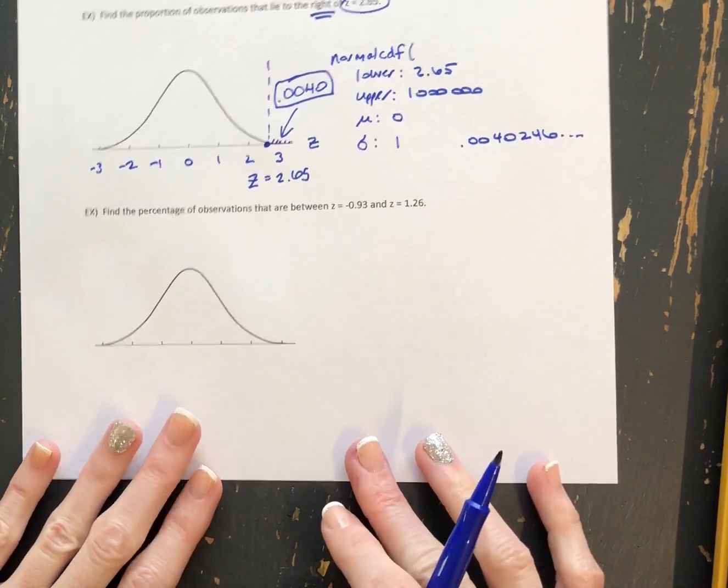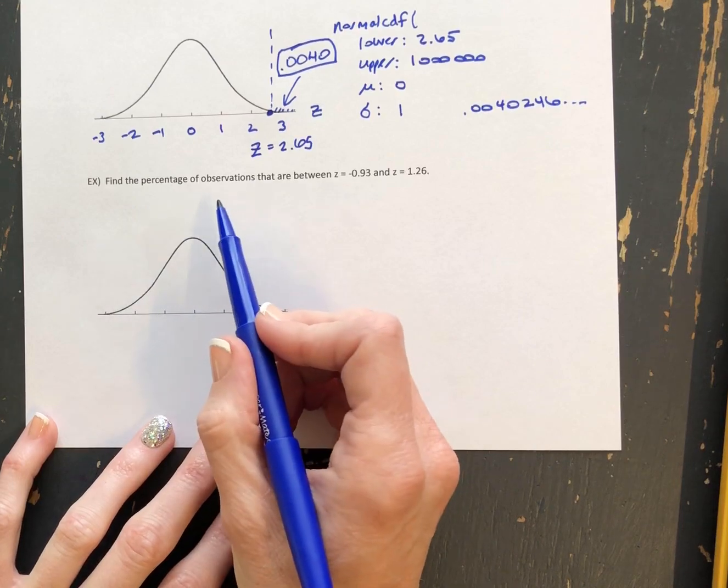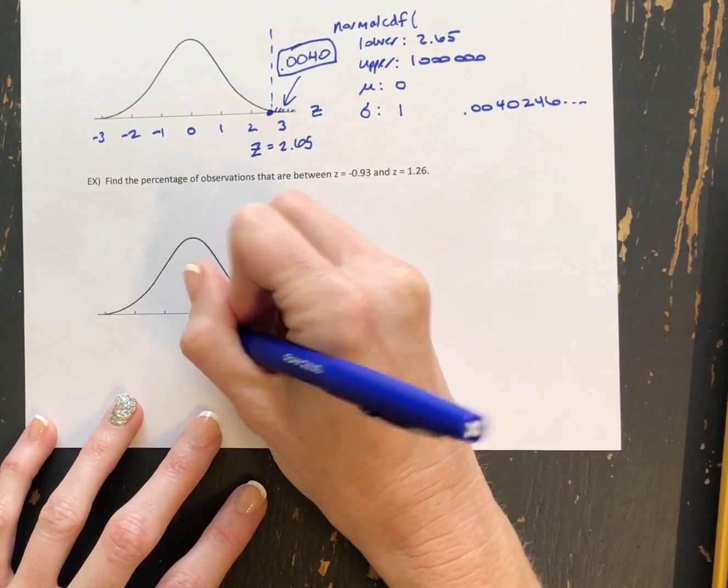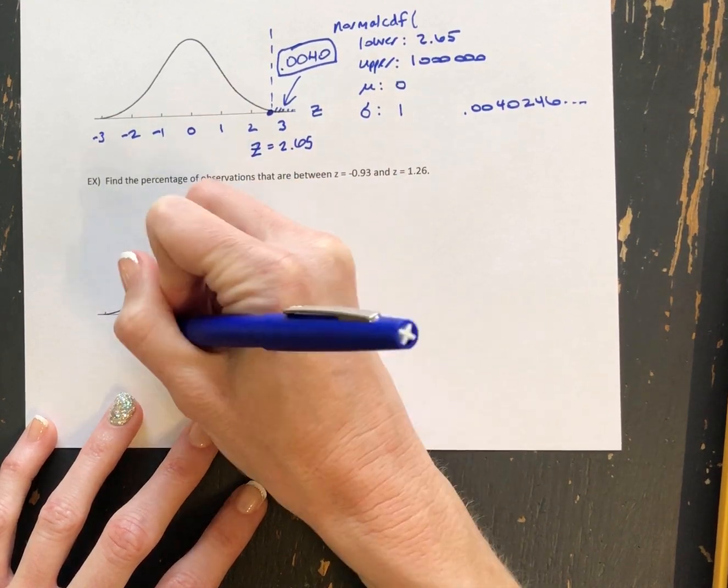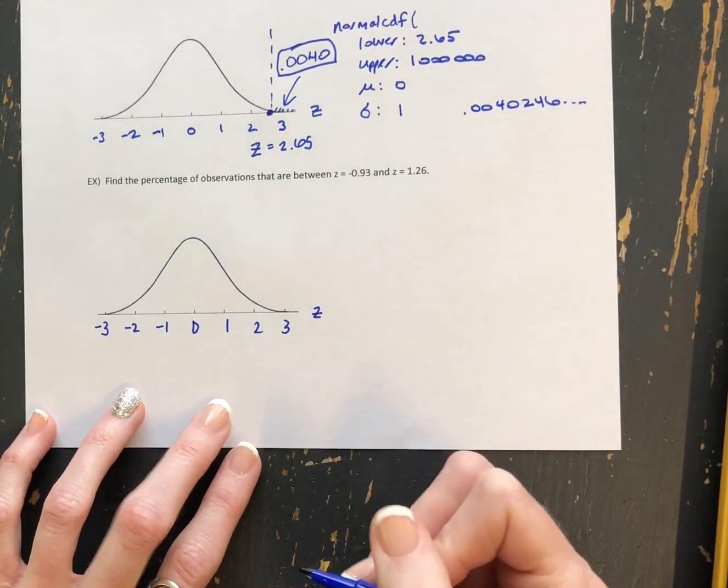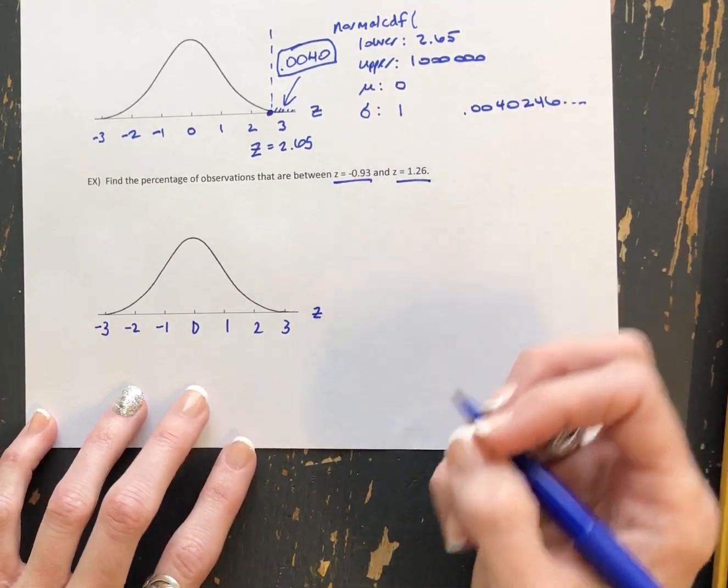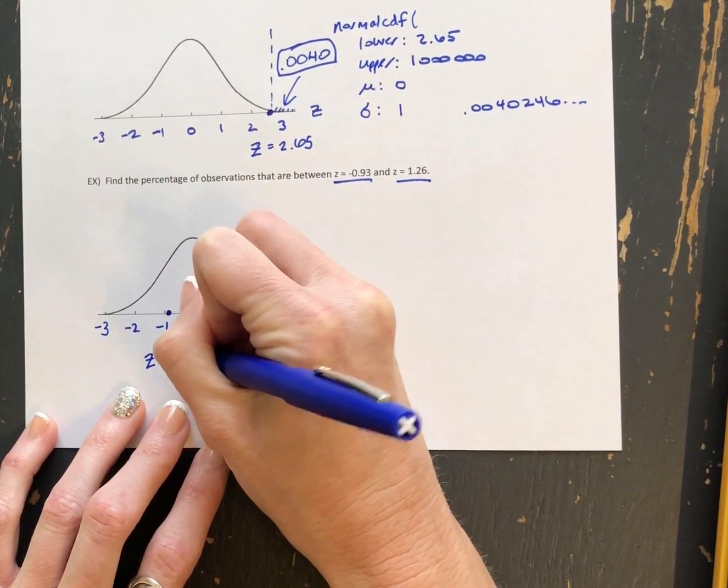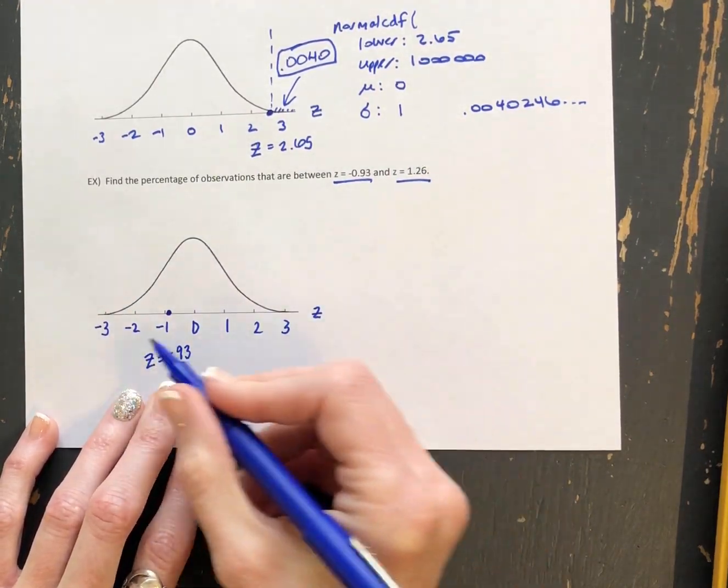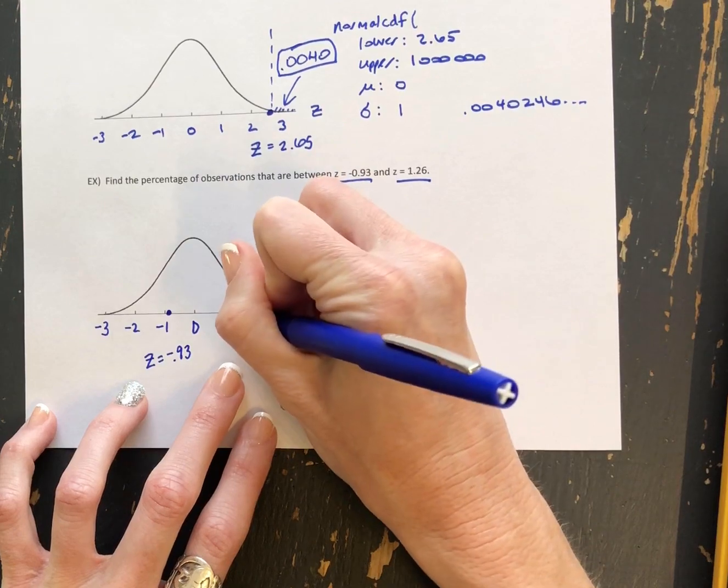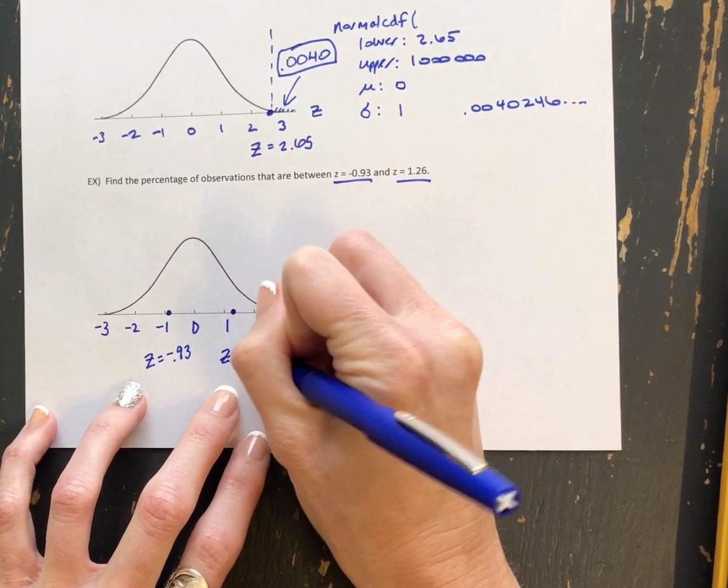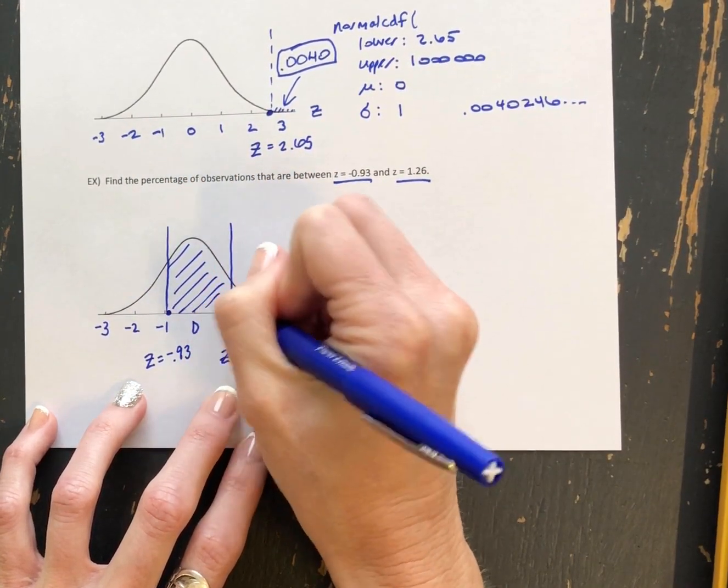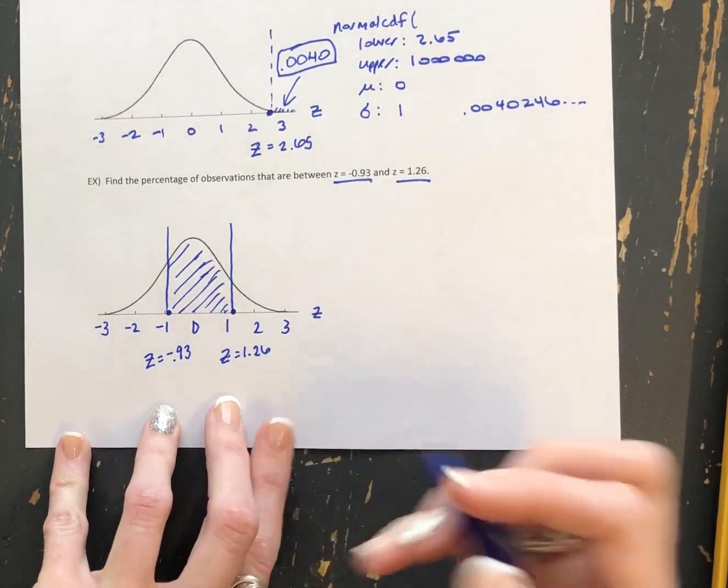And then our last example, we're going to look at finding the percentage of observations that are between two z-scores. So we're still looking at z-scores. Centered at 0, standard deviation 1. This time we've got two z-scores that we're interested in. So we have negative 0.93, which is going to be down here. Again, always labeling z-scores on the horizontal axis. And then our other z-score is 1.26. And what we're looking for here is that area, the area in between those two.